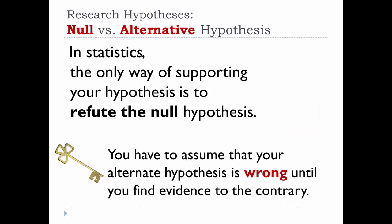Now the key is that you have to assume that your alternative hypothesis is wrong until you find evidence to the contrary. You are never trying to prove or support the null hypothesis. It's just that the null is presumed to be correct unless you can prove it to be wrong.